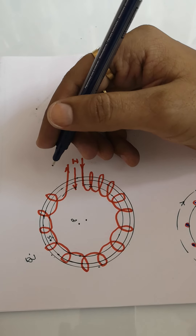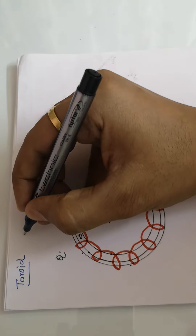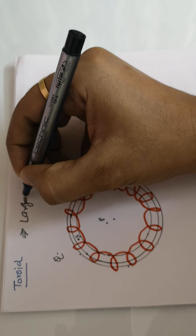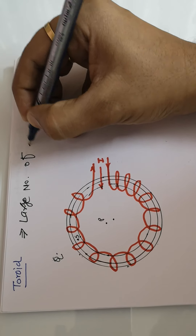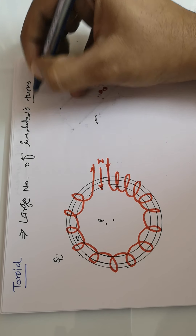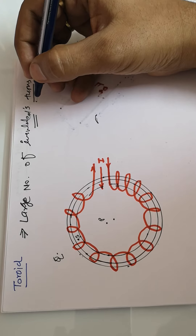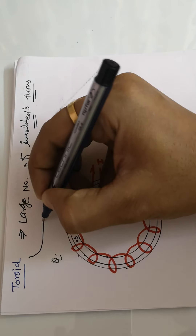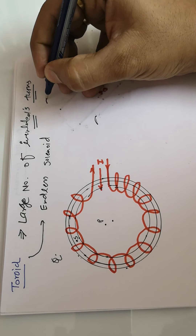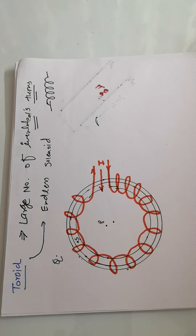In this clip we will discuss about toroid, as we have discussed about solenoid in a previous clip. Toroid is also one type of solenoid but it contains a large number of turns wound over a conductor. The conductor is a metallic wire coated with an insulator. You can say that a toroid is called an endless solenoid — it has the same spiral shape as a solenoid but is placed on a circular conductor.